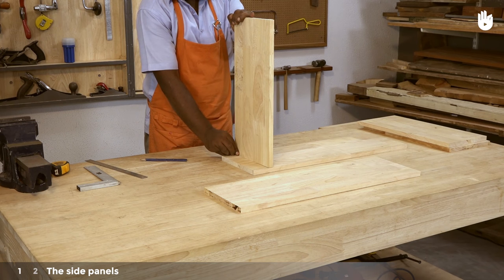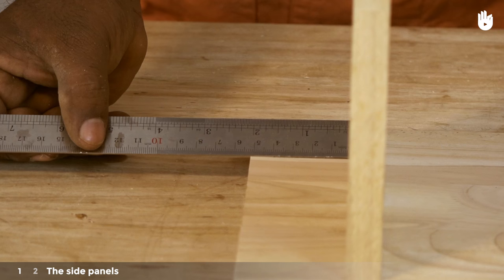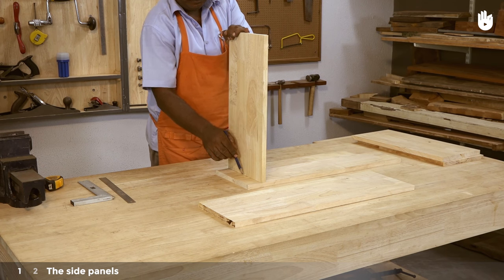Place the bottom shelf in position on one of the side panels. Here we have set it at 5 cm from the edge. Mark both edges of the shelf on the side panel.